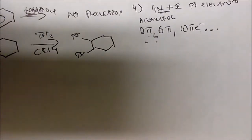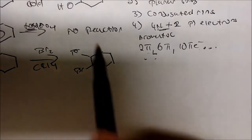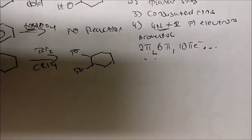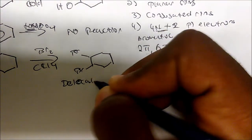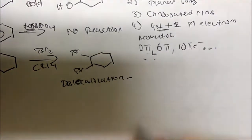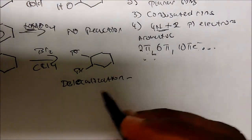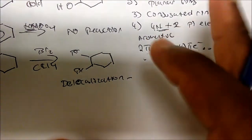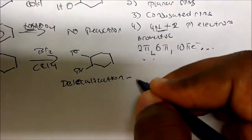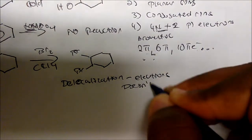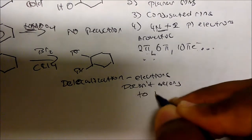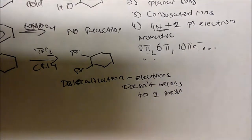Before I jump to the examples, I want to explain something very important that will become confusing otherwise: delocalization. In organic chemistry, this is related to resonance. The whole idea is that electrons do not belong to one atom — they can be spread across the ring.